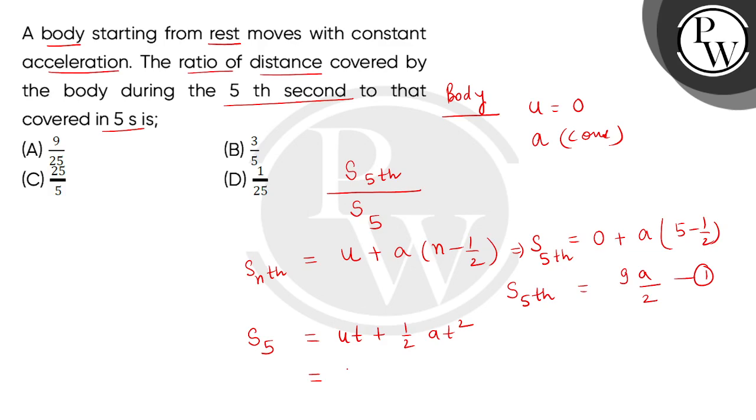25a divided by 2. This is equation number 2. Now we can find the ratio: 9a divided by 2, divided by 25a divided by 2. So the correct ratio is 9 is to 25.